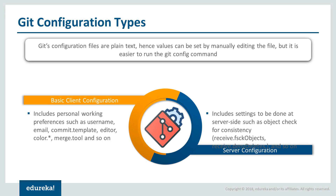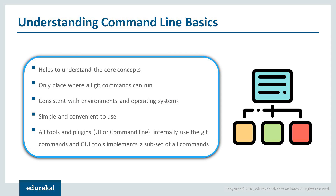Git configuration options fall into two categories: client-side and server-side. The majority are client-side, meaning they configure personal working preferences — including username, email, commit template, editor, and colors of the git console. The server-side has fewer options but interesting ones, such as receive.fsckObjects, which ensures every object received during a push still matches its SHA1 checksum and points to a valid object. This is not done by default and must be enabled through git config options. Let's now look at some command line basics.